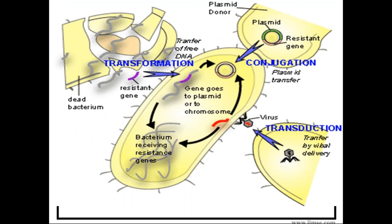This picture shows three mechanisms by which bacteria can acquire a resistant gene. In transformation, a dead bacterium found in the environment carries a resistant gene; this gene is taken up and incorporated into another bacterium, which then replicates it. The bacterium receiving the resistant gene is called the acceptor, and the one donating it is called the donor.